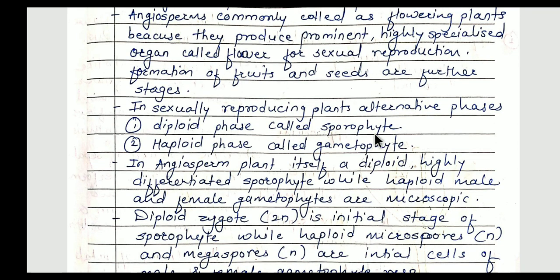The two important phases are the diploid phase called the sporophyte and the haploid phase called the gametophyte. Diploid means '2n' — it means 46 chromosomes are present. The cell having 46 chromosomes is called a diploid cell, and those cells are called the sporophyte. The first step for plants that reproduce sexually is that they should have the sporophyte — the diploid phase should be completed.